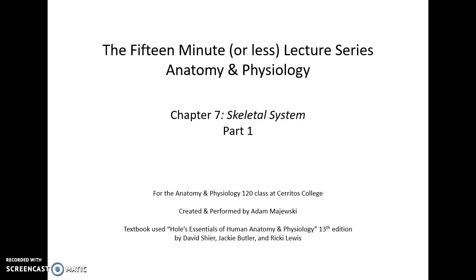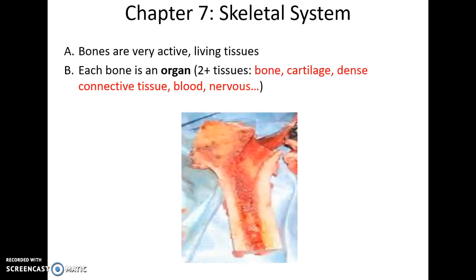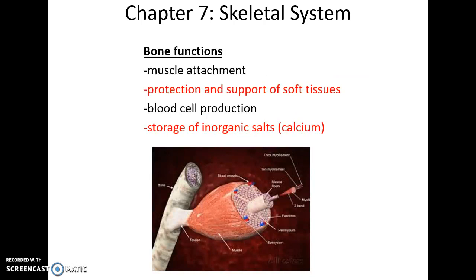Welcome to the 15-minute-or-less lecture series on anatomy and physiology, chapter seven: the skeletal system, part one. Bones are very active living tissue, and each bone is in itself an organ because an organ has two or more different kinds of tissue. In the case of bone, you have bone tissue, cartilage, connective tissue, blood, and nervous tissue.